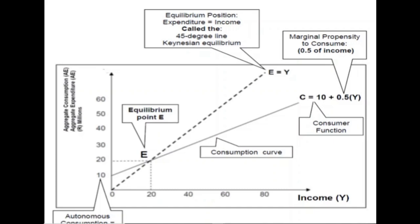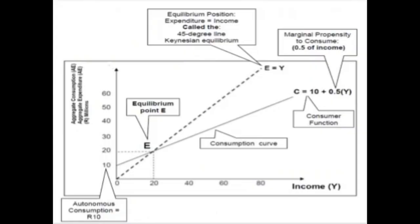Let's test the theory. For every 40 rand spent, if the multiplier is two, I draw my line and my income will be 80. We are showing that we spend 0.5 of what we earn, so my MPS is 0.5 and my MPC is 0.5.